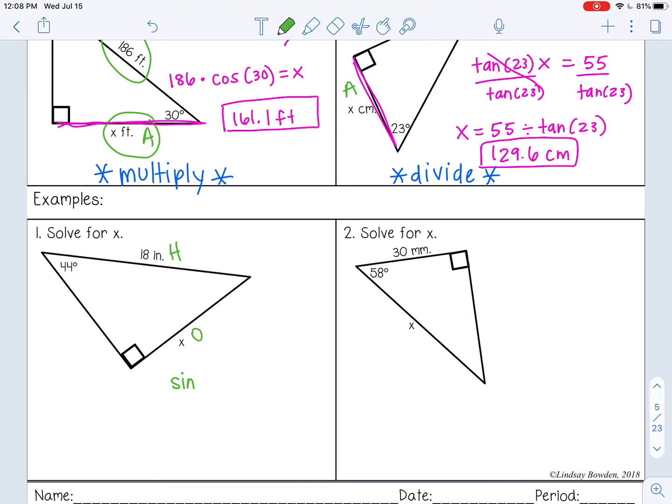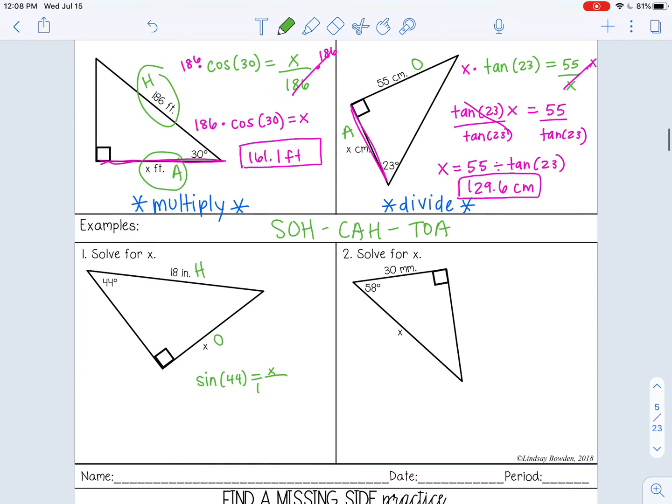So let's set up our equation. Sine of 44 equals - remember SOH-CAH-TOA, you're going to be writing that all the time. Sine is opposite over hypotenuse. So opposite is x, hypotenuse is 18.